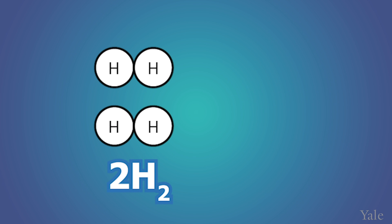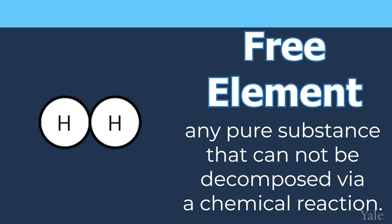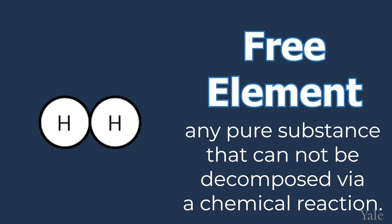We can convert water into hydrogen gas in the form of H2 and oxygen gas in the form of O2. If we can decompose a pure substance into simpler compounds, then we know that it is a compound. But if we take the H2 or O2 that is generated, we cannot decompose this pure substance further via a chemical reaction because it is a free element. A free element is any pure substance that cannot be decomposed via a chemical reaction.